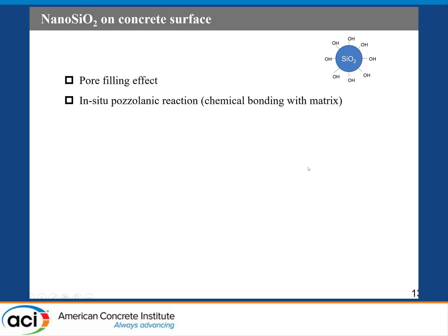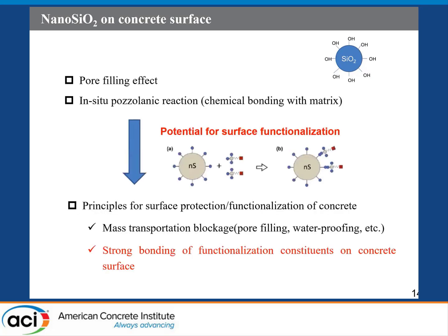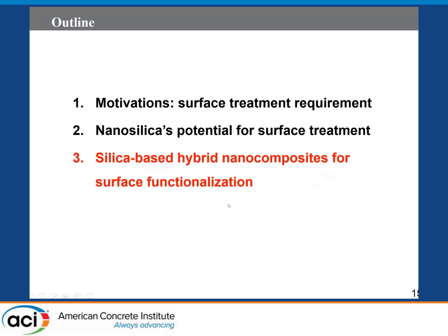Can we use this advantage to endow cement concrete with other new functionalizations? Looking at the features of the structure of nanosilica, this material can be easily grafted with other functional components. It can serve as a bonding phase for the matrix and also bring in some new functions. That's the idea from the analysis of the properties of nanosilica. I would like to give some examples of silica-based hybrid nanocomposites for surface functionalization of concrete.